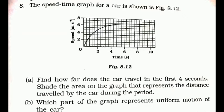Moving ahead to the next numerical: the speed-time graph for a car is shown in figure 8.12. Observe this figure carefully. Based on this, we are to find: how far does the car travel in the first 4 seconds; shade the area on the graph that represents the distance travelled during the first 4 seconds; and which part of the graph represents uniform motion of the car.